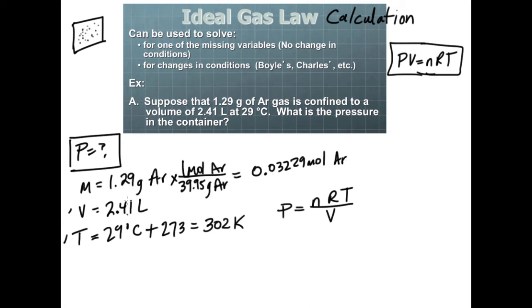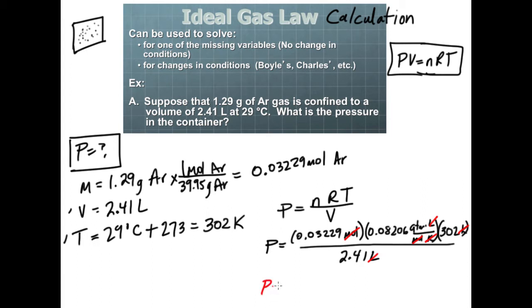I'm going to plug all this information into the equation. The moles are plugged in, R—notice the R I chose is 0.08206—and I strongly recommend you write the units because you can follow and make sure everything works out properly. Kelvin temperature is gone, liters are gone, I'm left with units of atmospheres. If I have 1.29 grams of argon at this volume and temperature, I would expect the pressure to be 0.332 atmospheres.